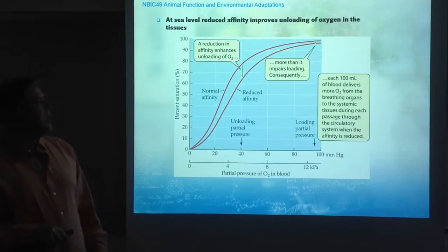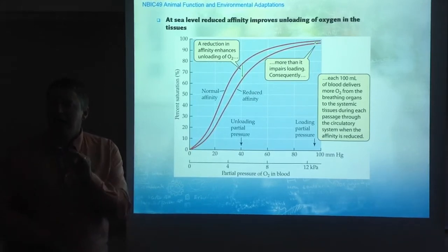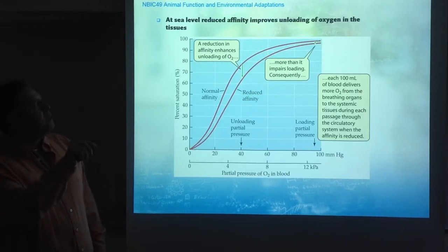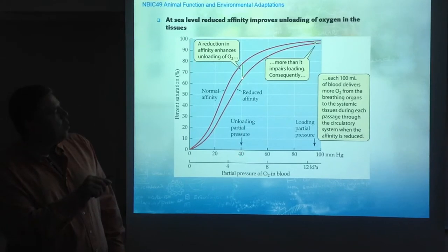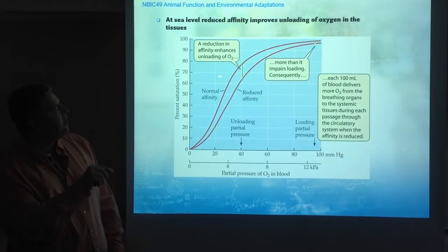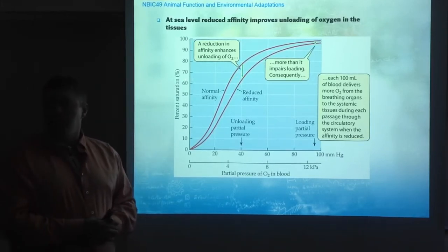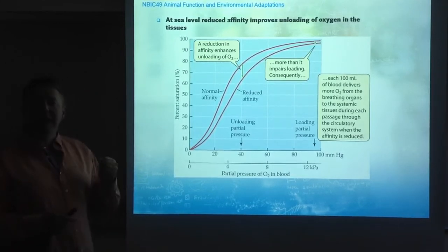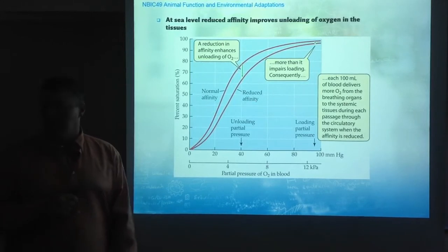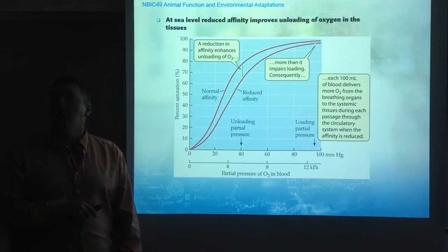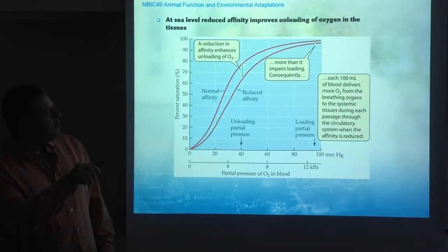This is happening at altitude, but is it beneficial? At sea level, a reduction in affinity improves unloading of oxygen in the tissues. For example, at a tissue partial pressure of oxygen of 40, with reduced affinity, instead of being 75% saturated, you are 65% saturated — meaning more oxygen is delivered to the tissues. Originally, when researchers found that acclimatized subjects had increased 2,3-DPG and reduced affinity, they assumed this was similarly beneficial at altitude — an improved unloading. Unfortunately, they were forgetting something very important.